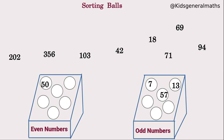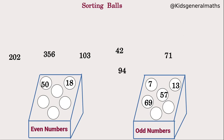Next, 18: it is an even number — place it in the even number box. Next, 69: it is an odd number — place it in the odd number box. Next, 94: it is an even number — place it in the even number box. Next, 71: it is an odd number — place it in the odd number box.